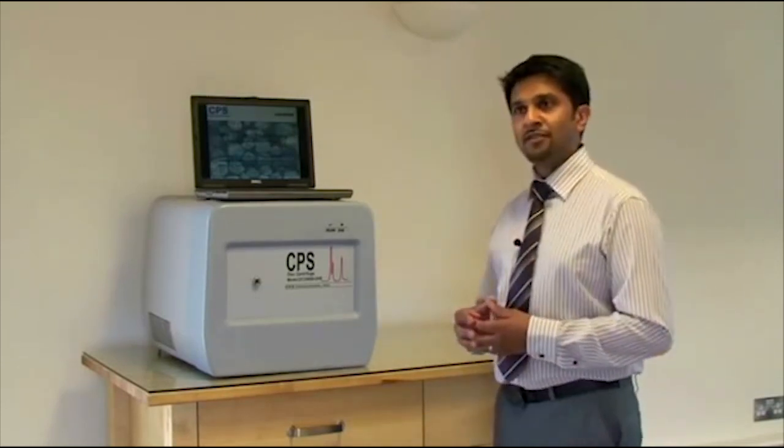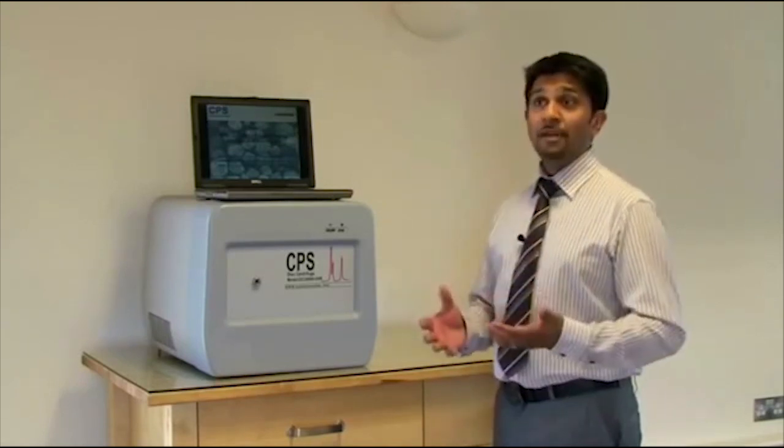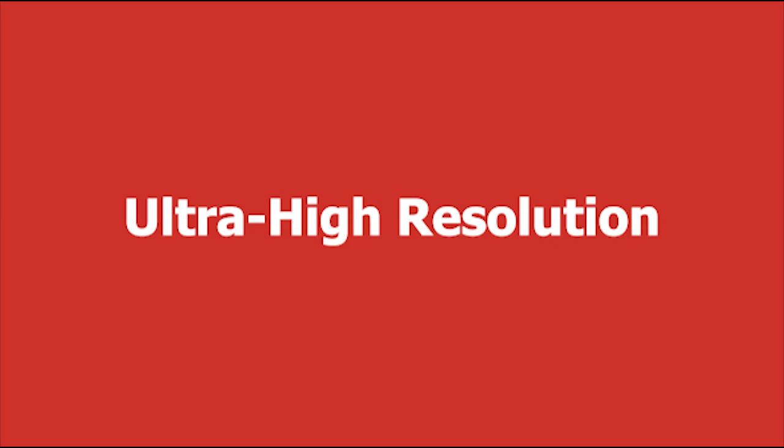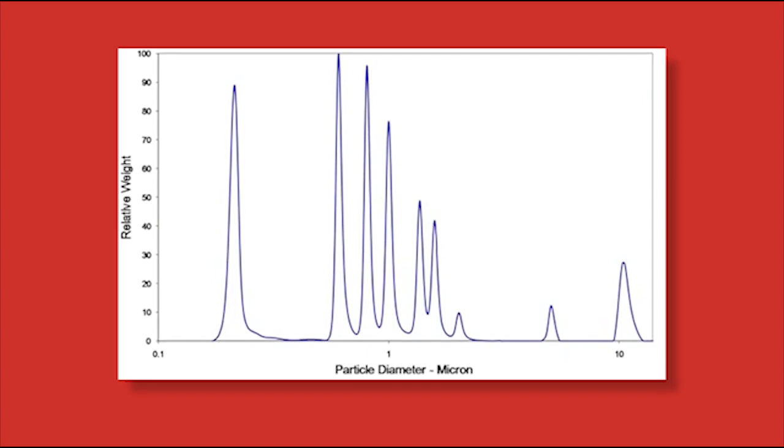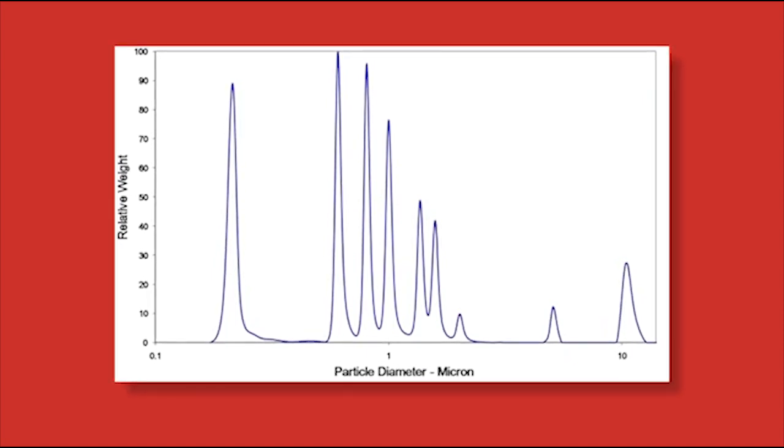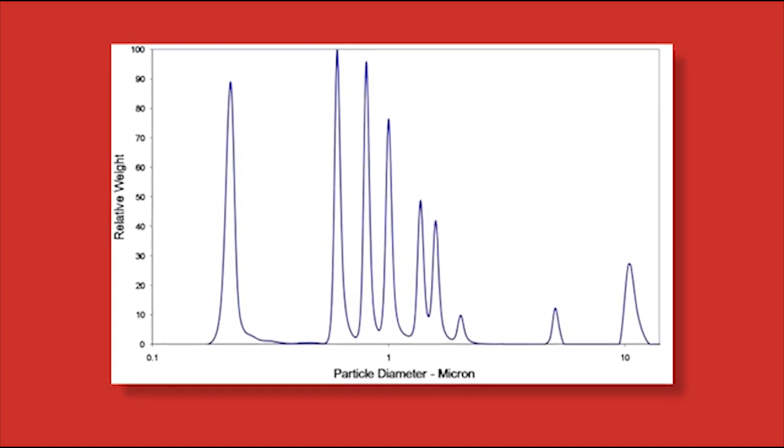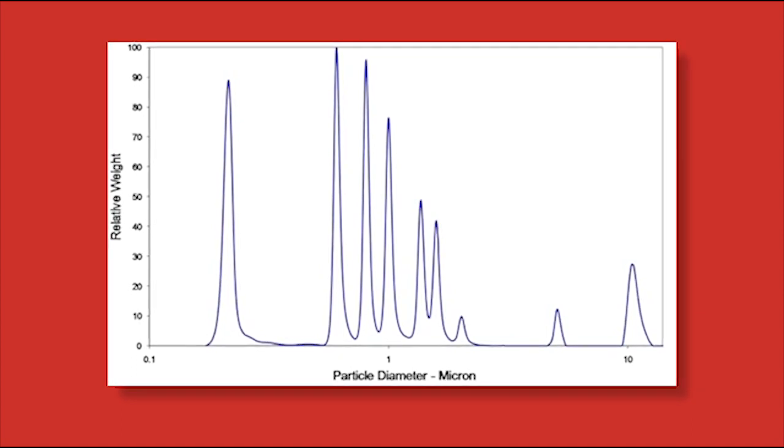When it comes to the CPS disc centrifuge one of the main benefits you'll find is the ability to give ultra high resolution, which means when you are characterizing a sample where you have many peaks, and in this example let's say we've got a polystyrene mixture with nine peaks, as you'll see from the distribution we can actually separate all nine peaks and resolve them and show them clearly on the screen.